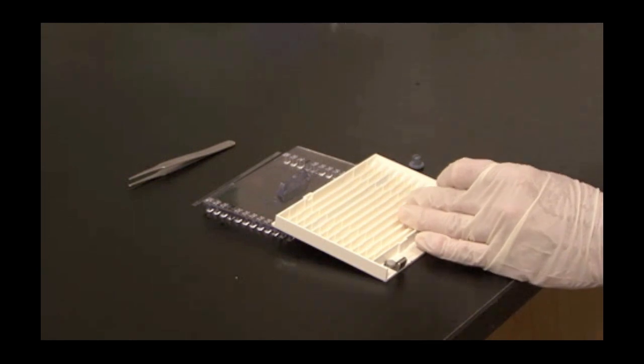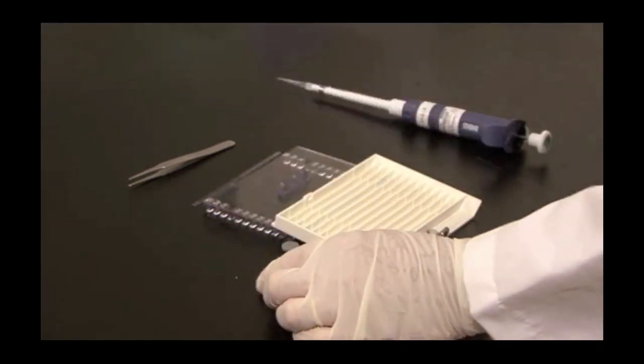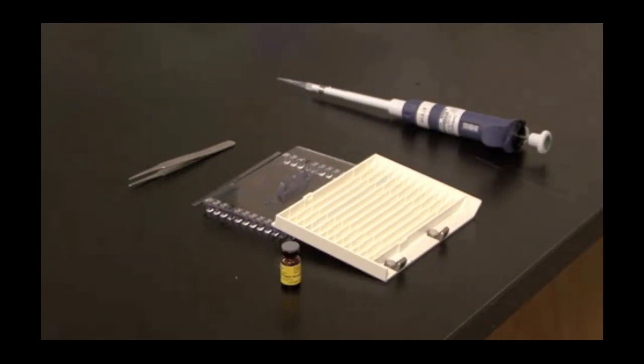You want to dispense it in a nice even bead from one electrode across to the other. I have shown you this with the focusing tray, but this can also be done with the rehydration tray.